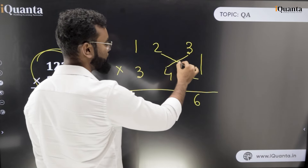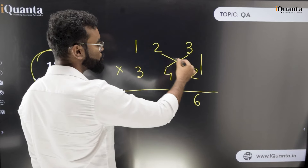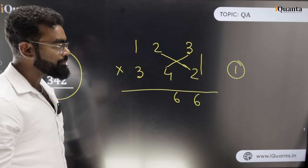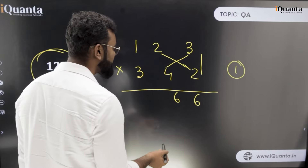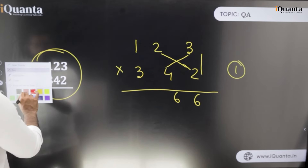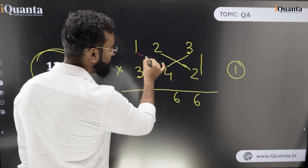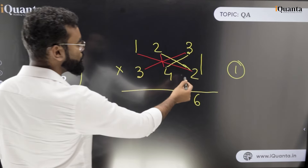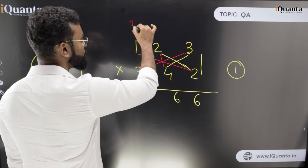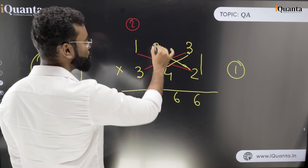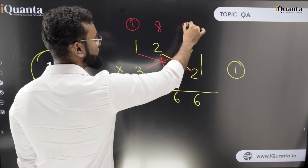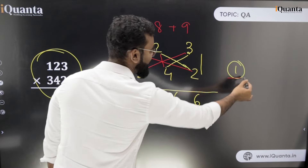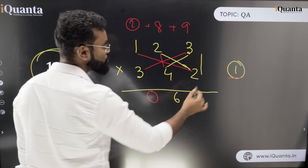The second step: 4 into 3 is 12, plus 2 into 2 is 4, so 12 plus 4 is 16 — write 6, carry 1. The third step involves three products: 2 into 1 is 2, 4 into 2 is 8, and 3 into 3 is 9. Adding them: 2 plus 8 plus 9 is 19, plus the carry 1 is 20 — write 0 and carry forward 2.